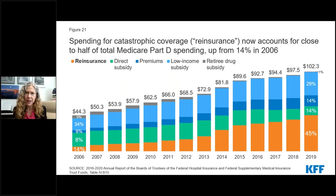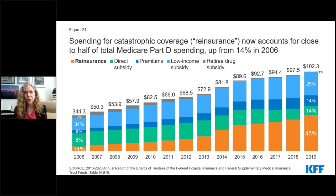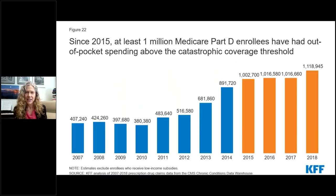This larger portion of program spending accounted for by reinsurance payments is a result of several factors, including an increase in the number of high-cost drugs covered by Part D, drug price increases, and a change made by the Affordable Care Act to count the value of the manufacturer discount on brand-name drugs in the coverage gap towards the out-of-pocket threshold for catastrophic coverage. This change has actually contributed to more Part D enrollees with spending above the catastrophic threshold over time. The number of enrollees without low-income subsidies who had out-of-pocket spending above the catastrophic threshold started increasing in 2011 and has exceeded 1 million each year since 2015.